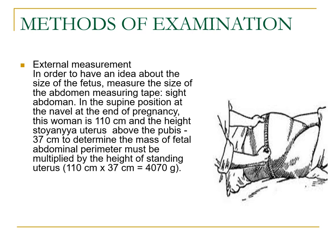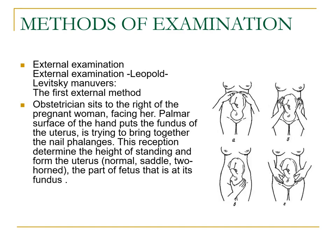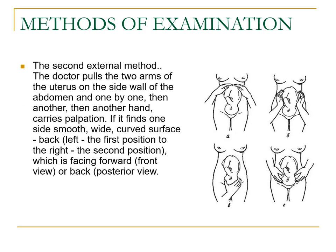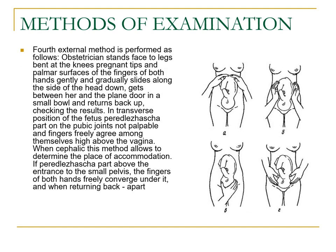For external measurement, in order to have an idea about the size of the fetus, we measure the size of the abdomen with a measuring tape. In the supine position at the navel, at the end of pregnancy this woman is 110 cm and the height of the uterus is around 37 cm. To determine the mass of the fetus, abdominal perimeter is multiplied by the height of the standing uterus. This is your Leopold maneuver (Lupal-Levitski maneuver). The first maneuver: sit to the right of the pregnant woman facing her with palmar surface of the hand, and place your hands on the fundus of the uterus, bringing together the phalanges. This determines the height of standing and the form of the uterus and the part of the fundus. The second maneuver involves palpating the maternal sides, checking for the fetal back and fetal limbs. The fetal back is where fetal heart sounds would be heard.